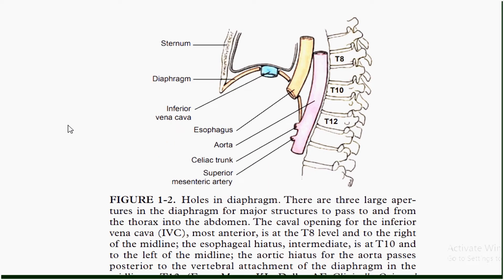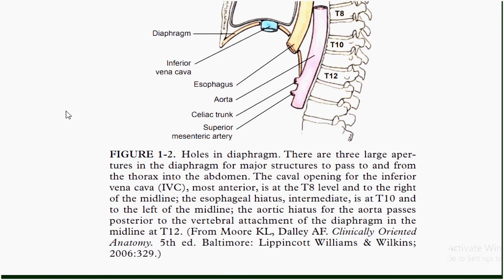Another diagram represents the openings in the diaphragm. There are three large openings in the diaphragm for major structures to pass to and from the thorax into the abdomen. The caval opening for the inferior vena cava is at the T8 level, to the right of the midline. The esophageal hiatus is at T10, to the left of the midline. The aortic hiatus for the aorta passes posterior to the vertebral attachment of the diaphragm in the midline at T12.